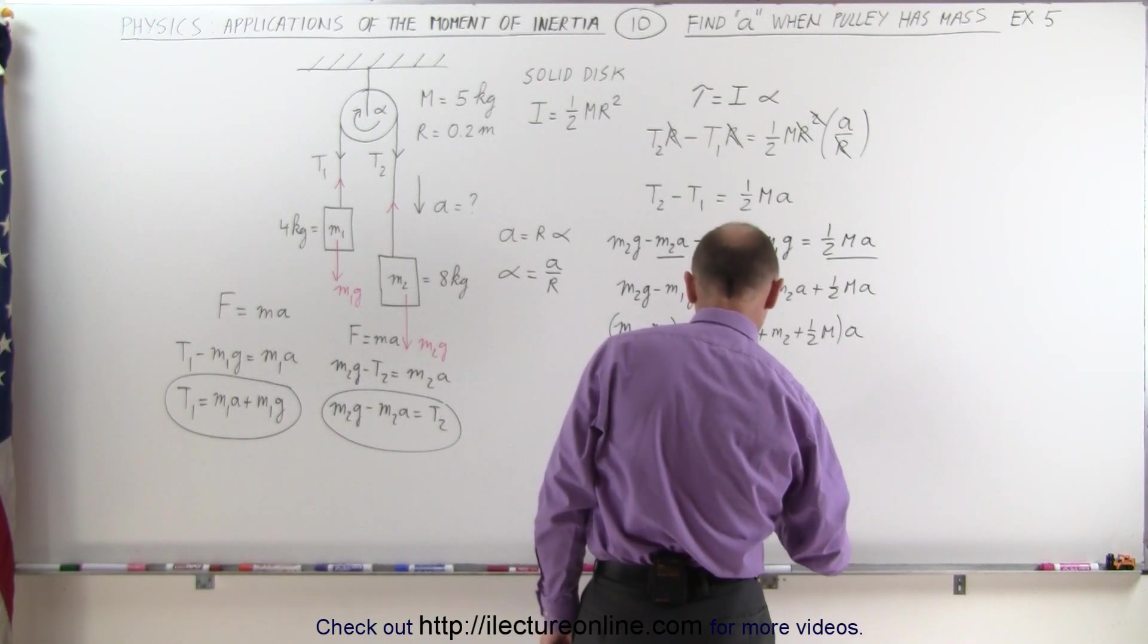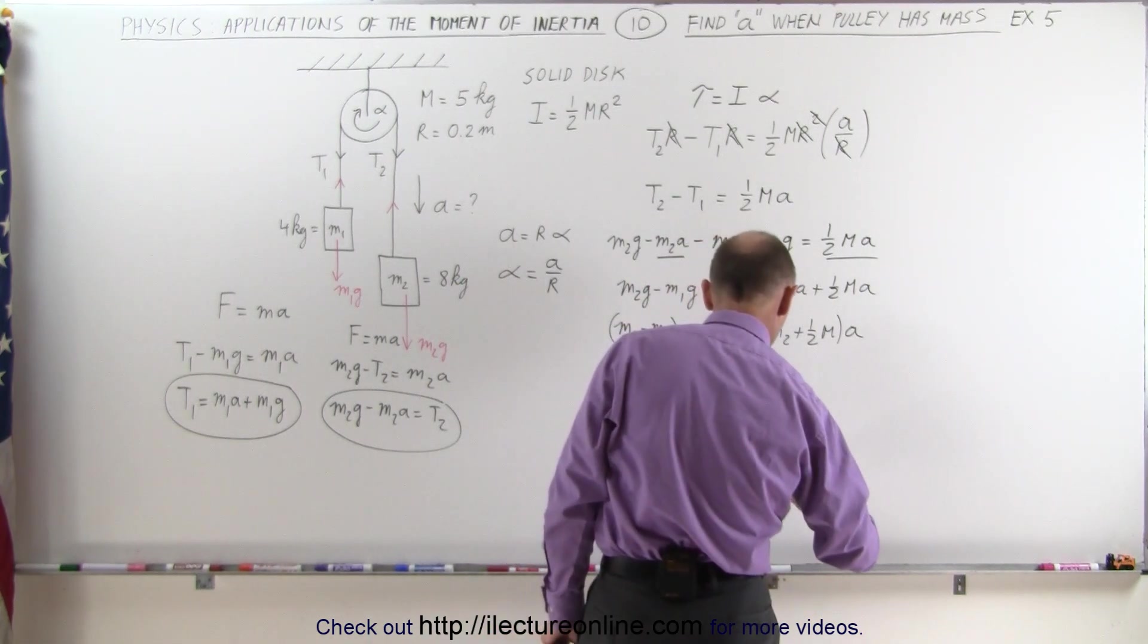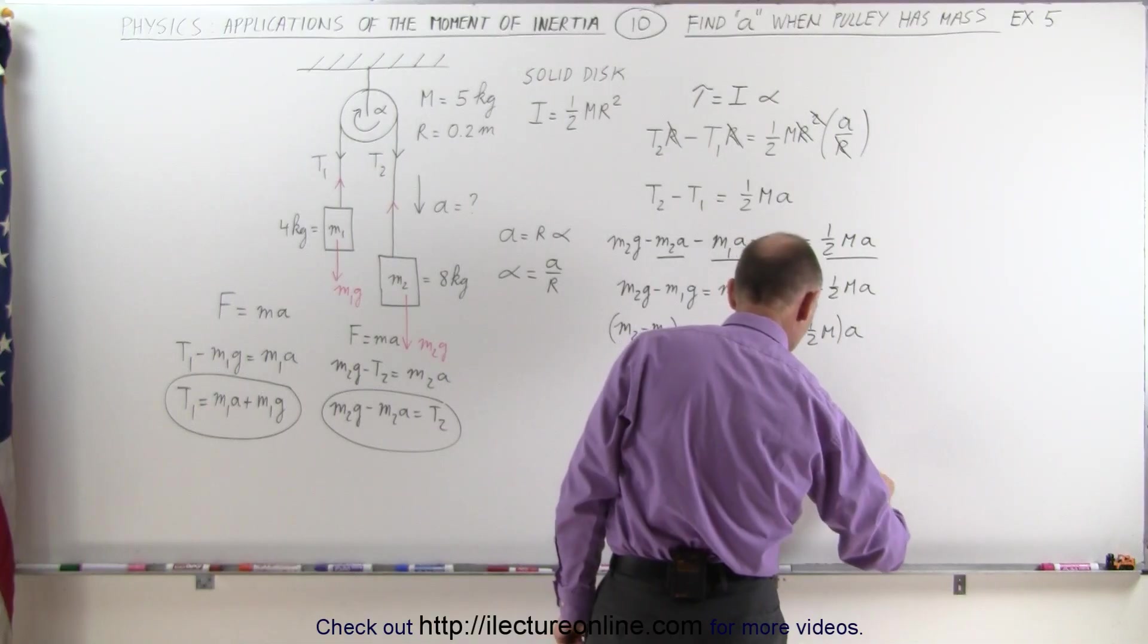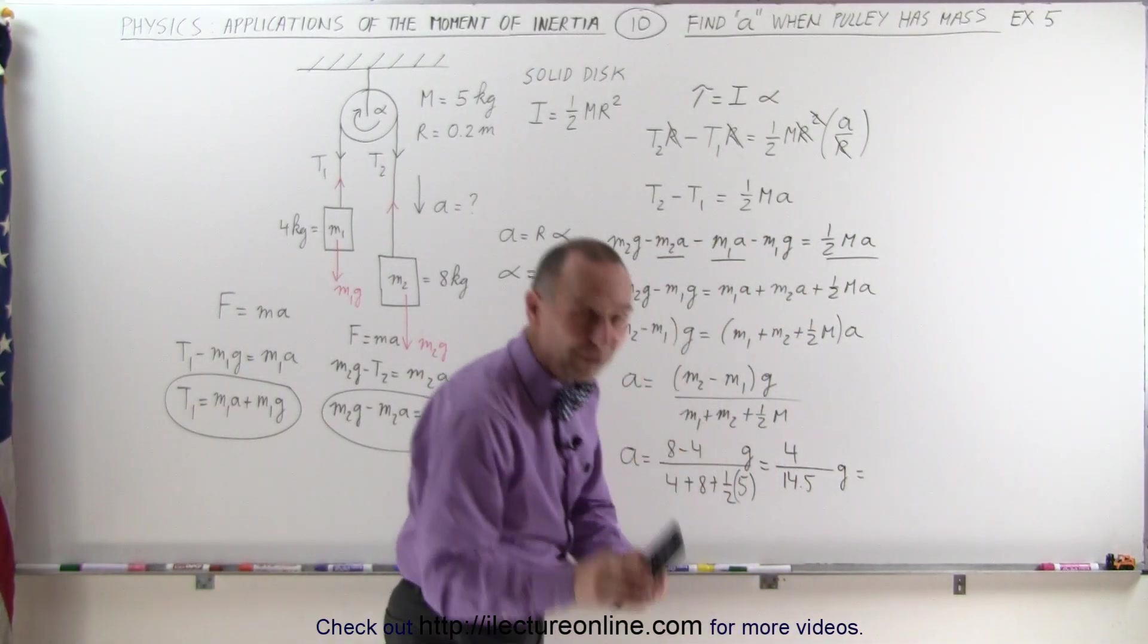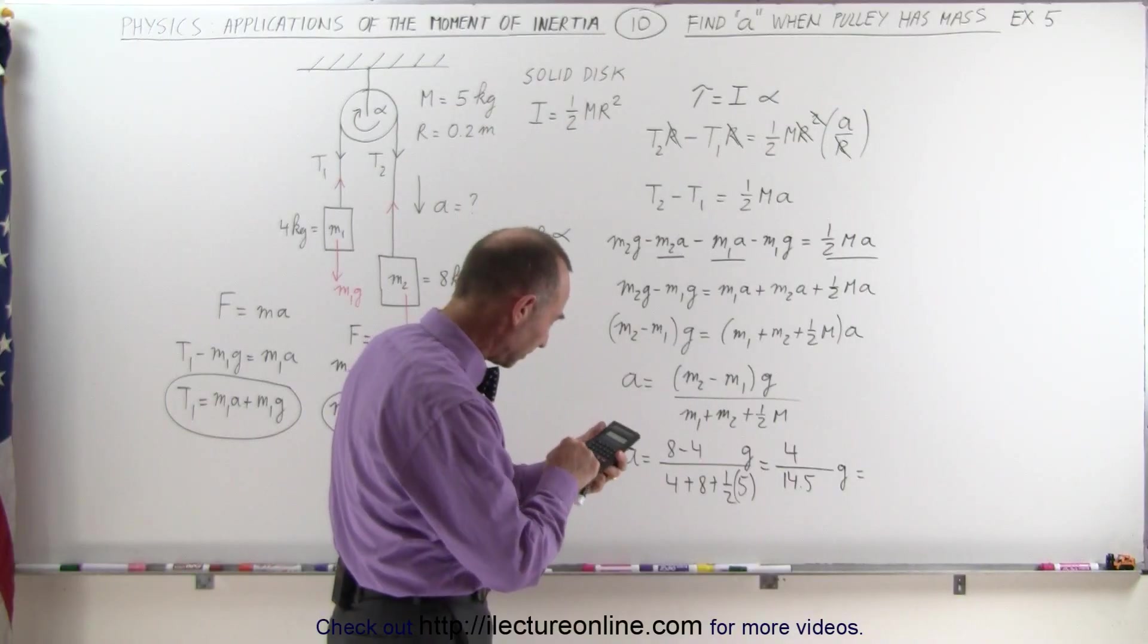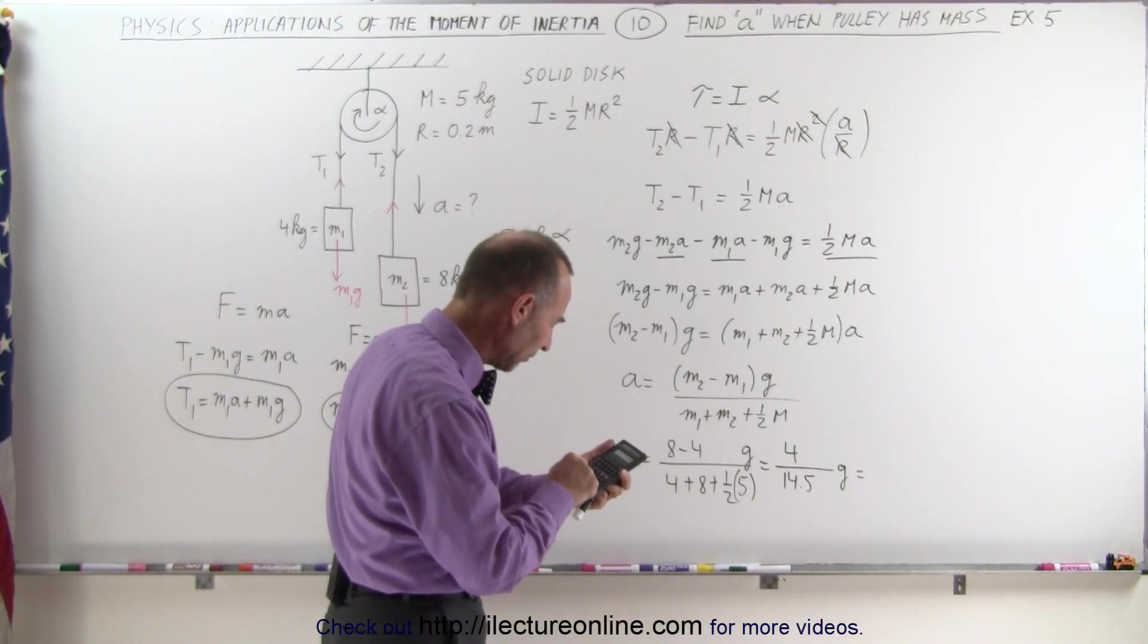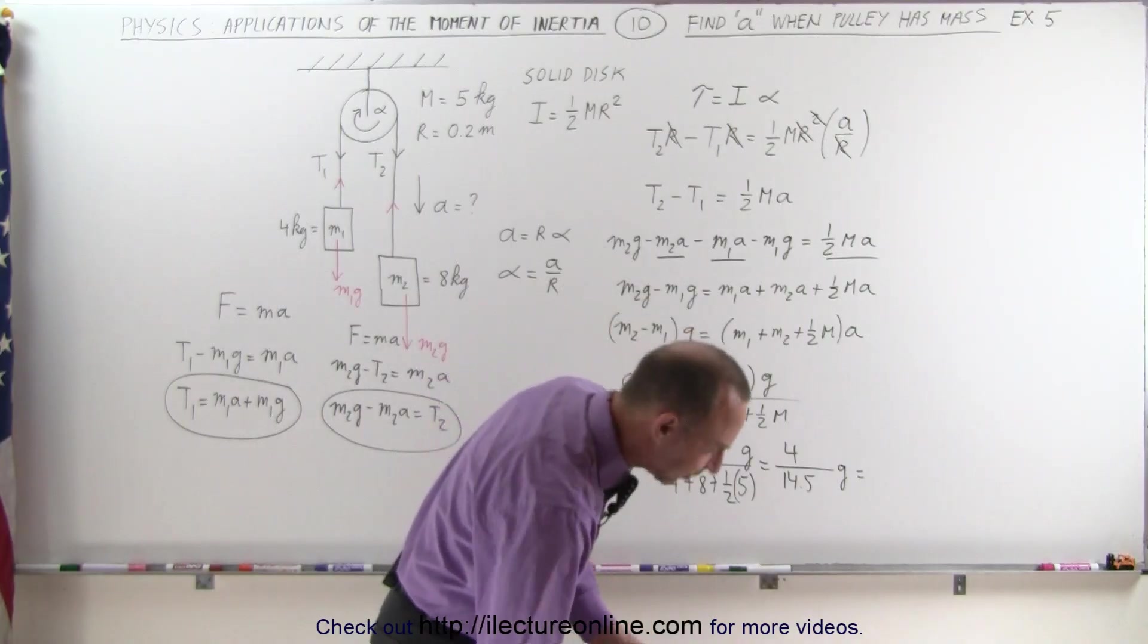And with a calculator, let's find out what that's equal to. 4 divided by 14.5, and we get 0.276.